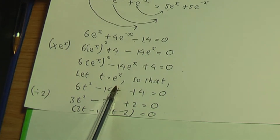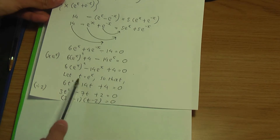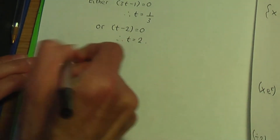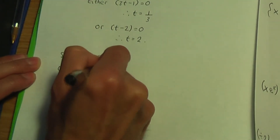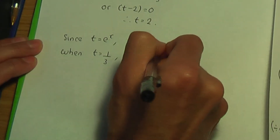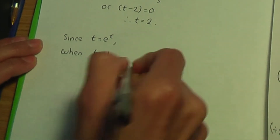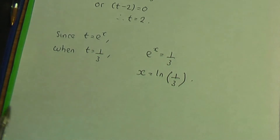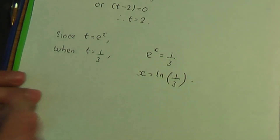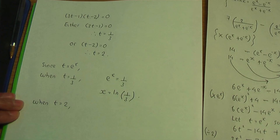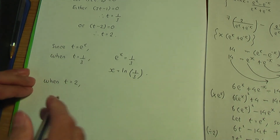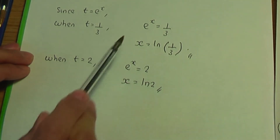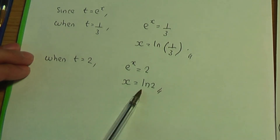Going back to our substitution t = e^x, we substitute each t value. When t = 1/3: e^x = 1/3, so x = ln(1/3). When t = 2: e^x = 2, so x = ln(2). These are the two solutions in terms of ln: x = ln(1/3) and x = ln(2).